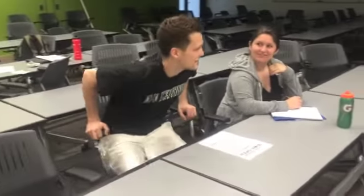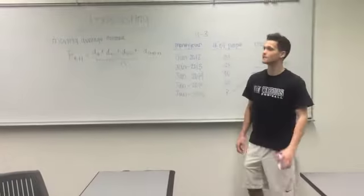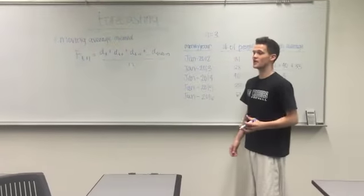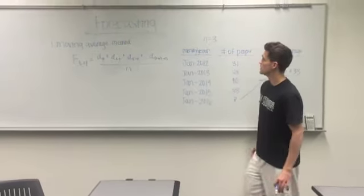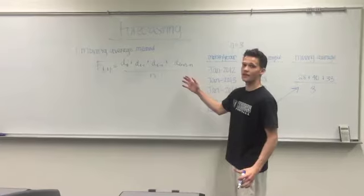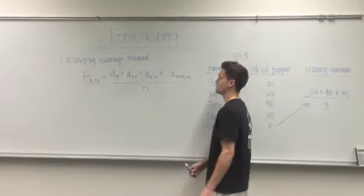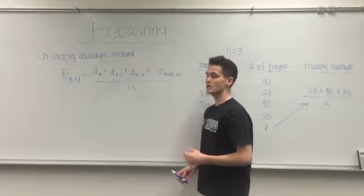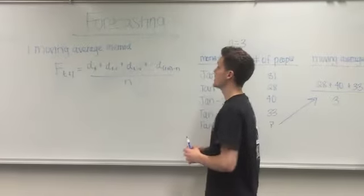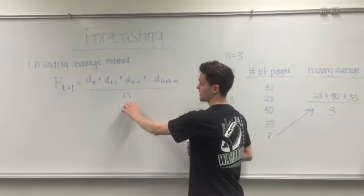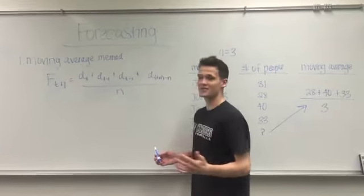Well, I was thinking back to when I took operations management back in college. I had this great TA who taught me about forecasting, and we learned about a moving average. Let me go to the board and show you. So we can forecast the number of yoga spots for January 2016 using the moving average method. With this method, we'll take demand from the previous years, which we have actual numbers, and use n as the average number in the prior periods.